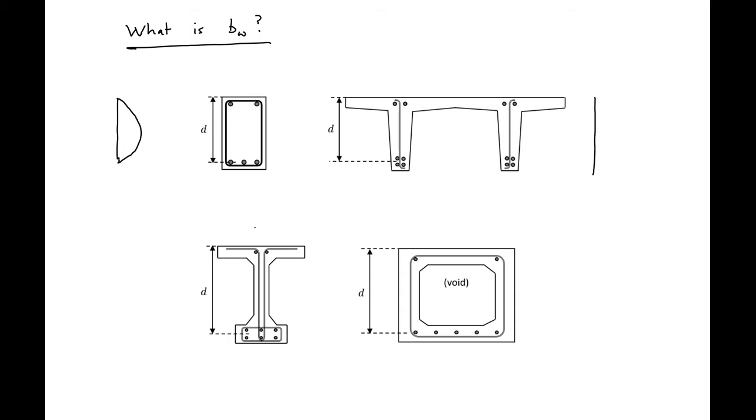This will be similar but a little different depending on some of the other sections that we may have. But what we'll notice is that our maximum shear stress is going to be at the centroid of the section. So what we can do to figure out what our BW is, is just draw a straight line across the mid-height or centroid of our section and then look at what the width of our section is at that height. In our rectangular section, BW equals just the width of our section.